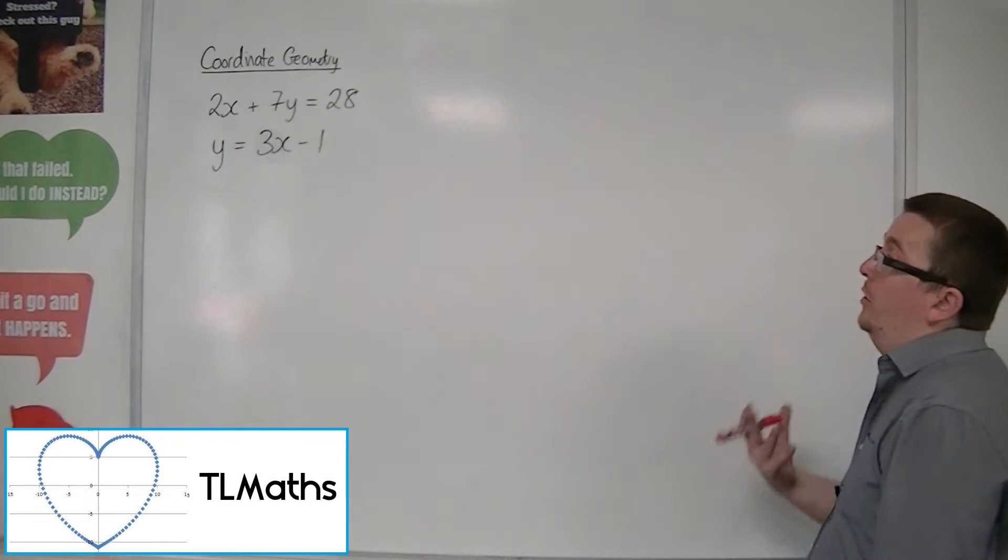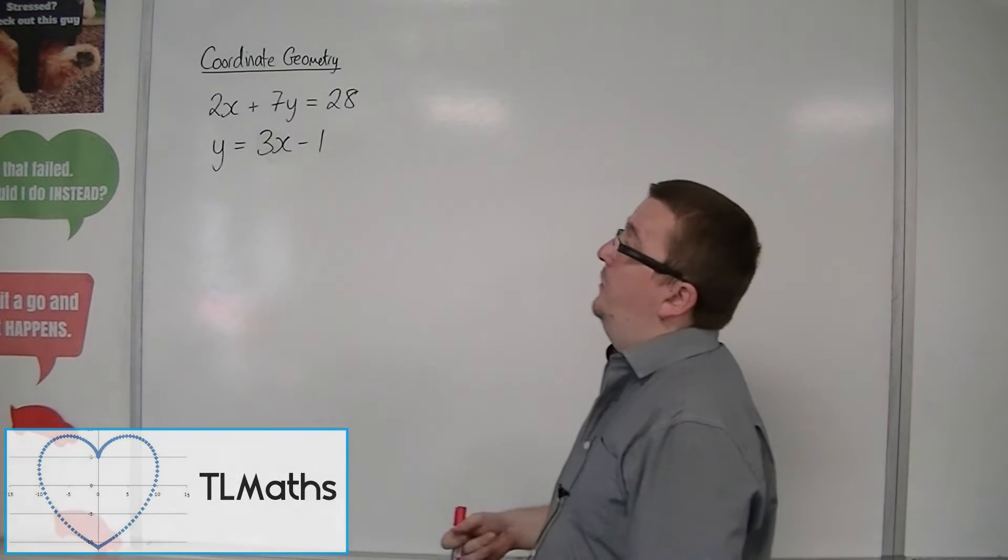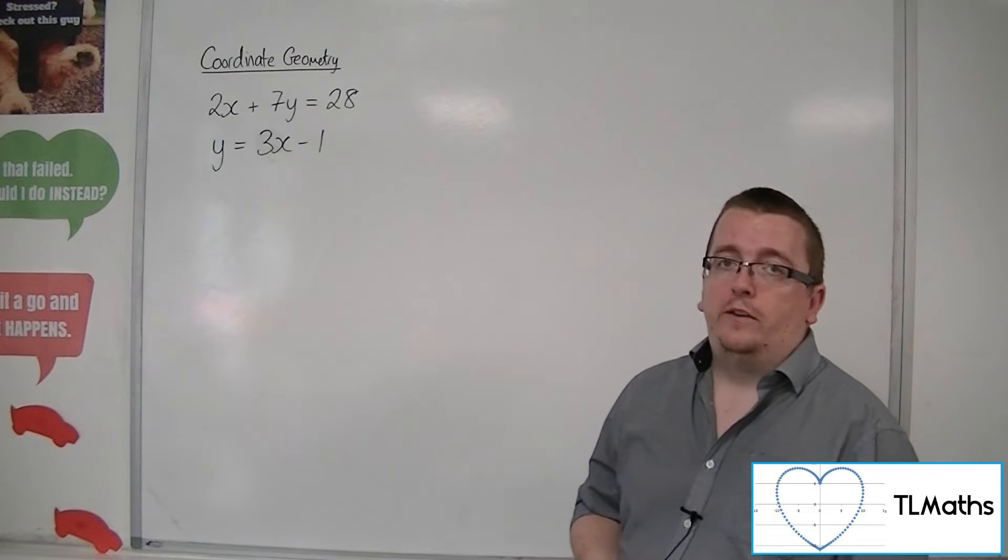So let's say we had two straight line equations: 2x plus 7y equals 28, and y equals 3x minus 1.